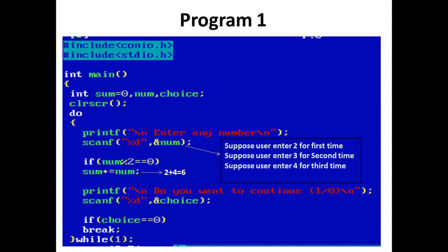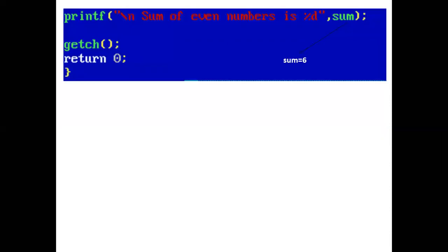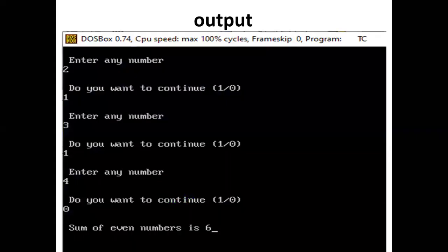Now the printf statement prints 'Do you want to continue? Press 1 or 0?' The user presses 0. And if 0 equal to 0 is true. So we come out of the infinite do-while loop using break. Now the printf statement prints 'Sum of even numbers is 6.' And our program ends here. Here is the output.